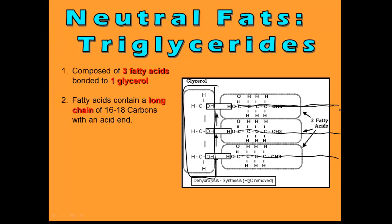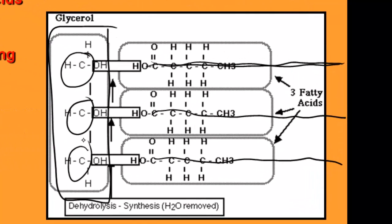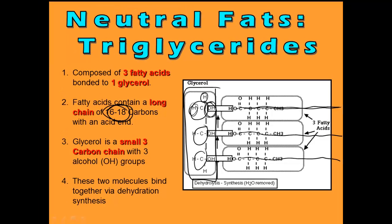Triglycerides are made from three fatty acids and one glycerol. Now these long carbon chains are usually about 16 to 18 carbons long. And the glycerol, on the other hand, is made of three carbons. You can recognize the glycerol molecule because those carbons are only attached to hydrogens and hydroxide molecules. When you put three fatty acids together with one glycerol, you lose three waters. This is an example of dehydration synthesis.